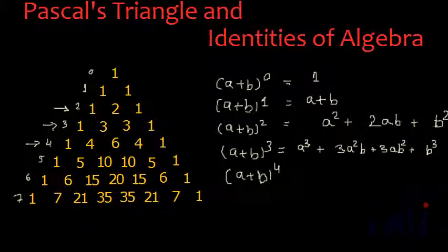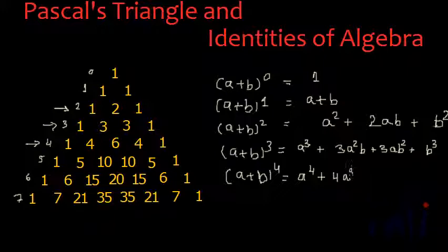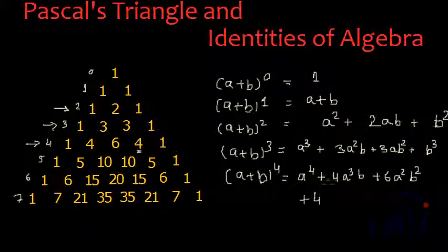The same approach works for power 4. The formula should be: 1×A⁴ = A⁴, plus 4×A³B, plus 6×A²B², plus 4×AB³, plus B⁴. Each step reduces the power of A by 1 and increases the power of B by 1. This is the formula for (A+B)⁴.